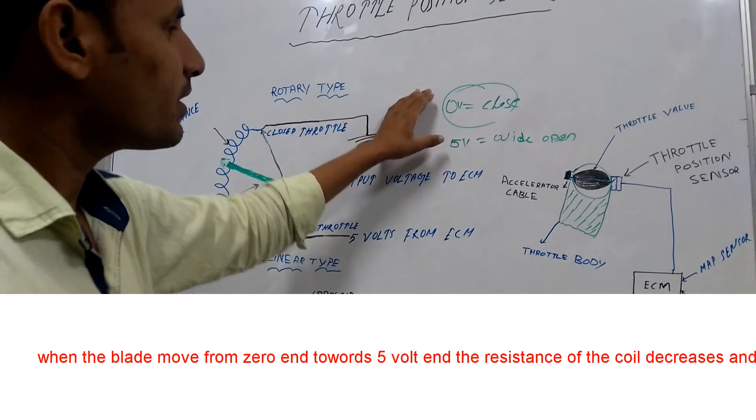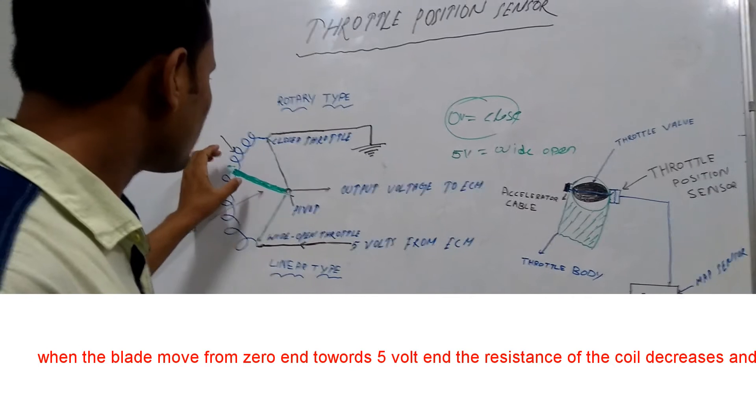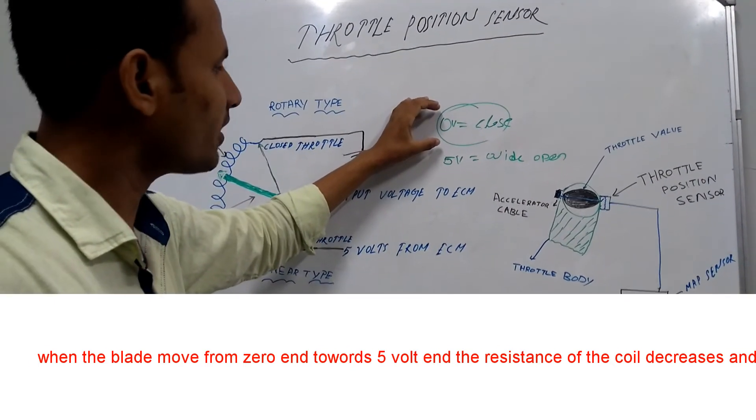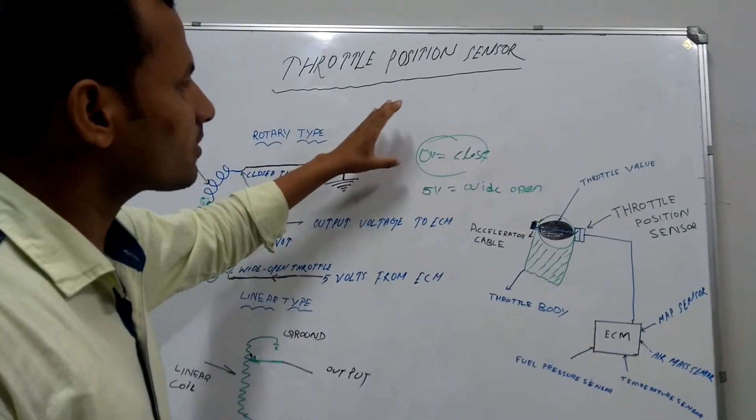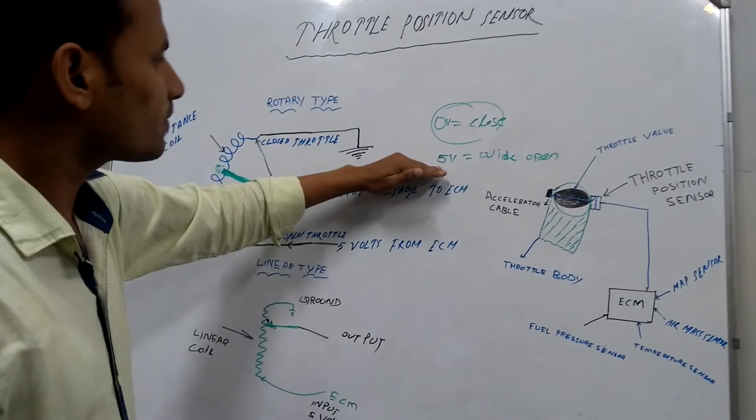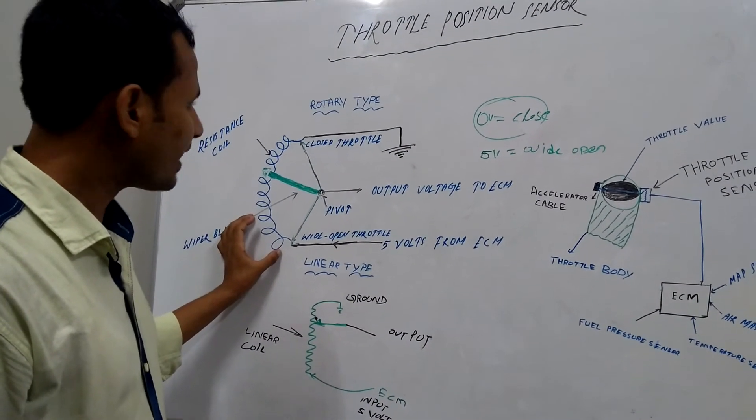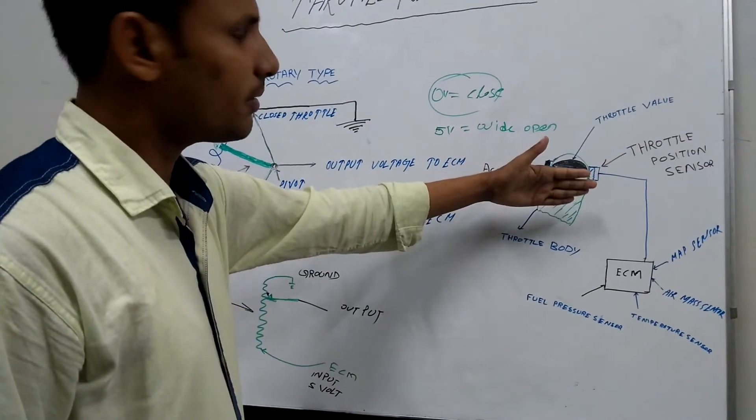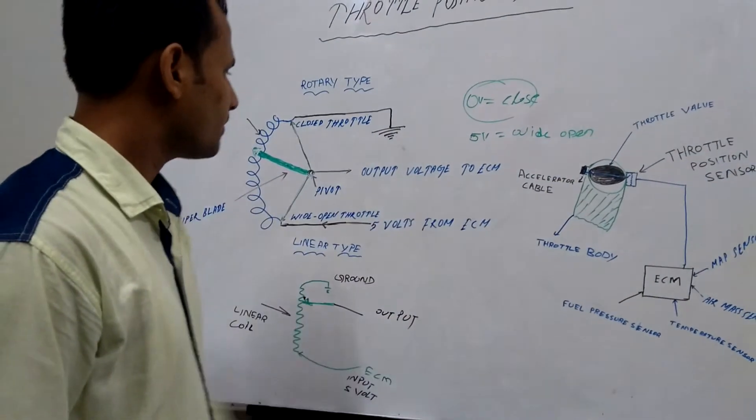Let's take an example. When the position sensor changes 0 volt or a small amount of voltage, that means the throttle valve is in close position. When the wiper blade changes a high voltage, that means the throttle valve is fully open position or wide open position.